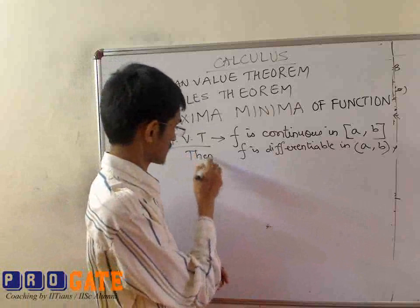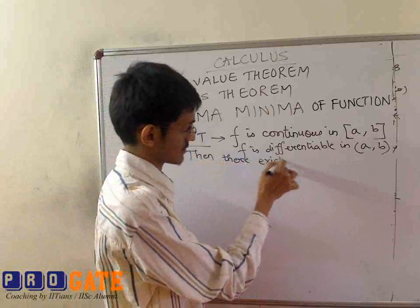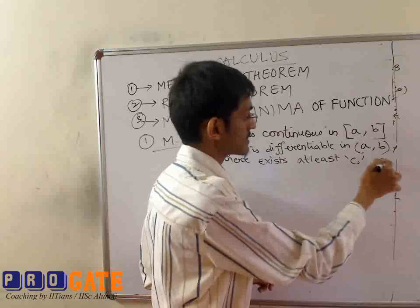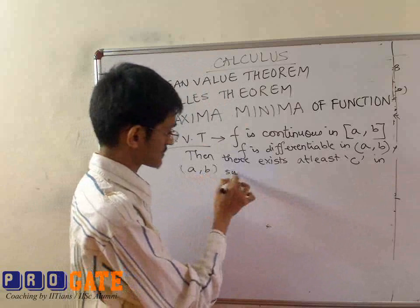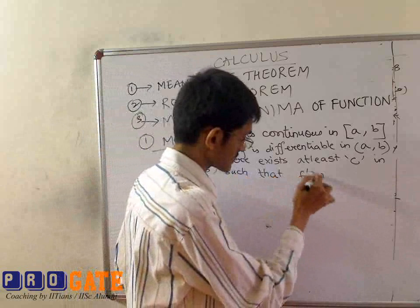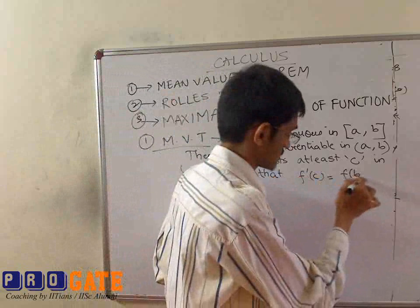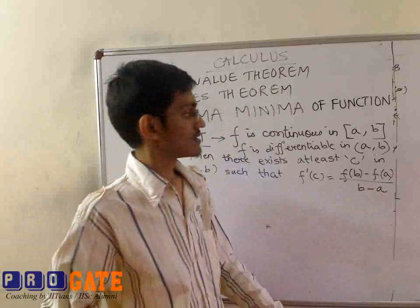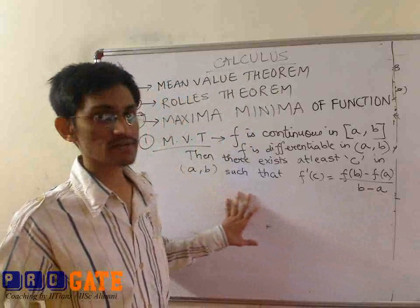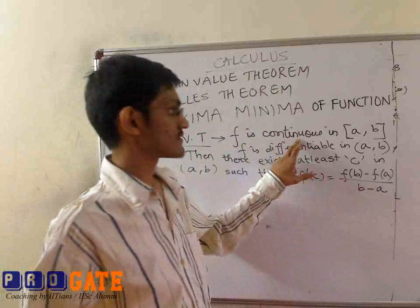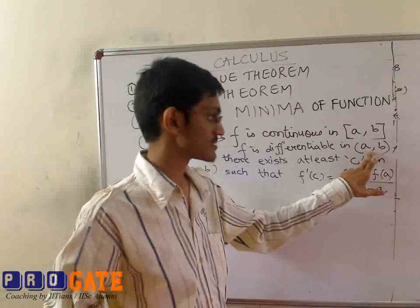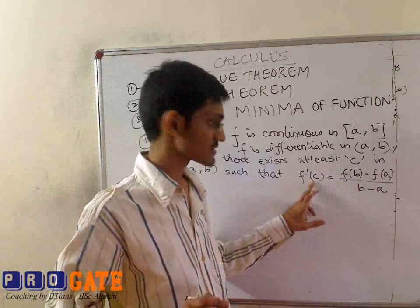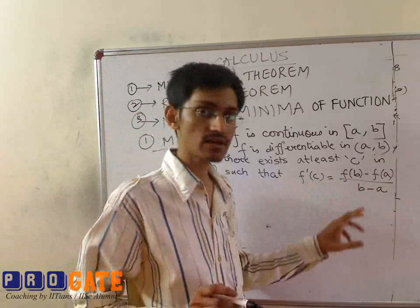Then there exists at least one point c in (a, b) such that f'(c) is equal to f(b) minus f(a) upon b minus a. So what does the mean value theorem give you? For an interval [a, b], if f is continuous and differentiable in the open interval (a, b), then there is at least one point c which has the slope of the function equal to f(b) minus f(a) upon b minus a.